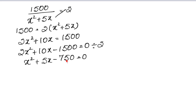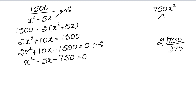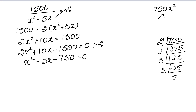Now we need factors of 750 such that their difference is 5. The factors are 30 and 25, since 30 times 25 equals 750 and 30 minus 25 equals 5. So the equation becomes: x squared plus 30x minus 25x minus 750 equals 0.